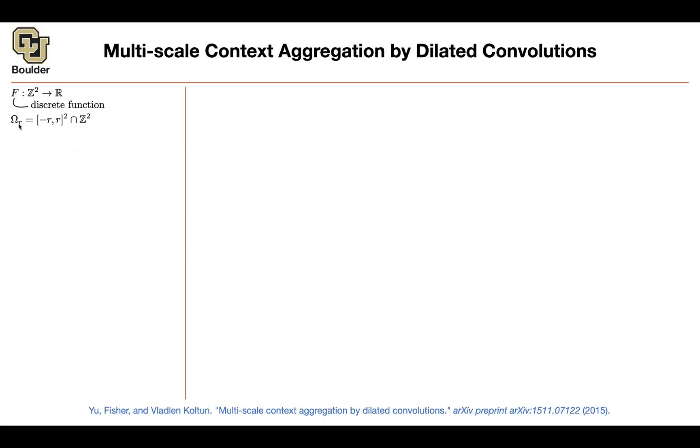We are going to define our domain for the kernel, and it's going to be from negative R to R squared, intersection with Z squared. So it's a small window in your space. Your kernel is going to be a function from this space to R, and how many discrete filter values you're going to have. The discrete size is going to be 2R plus 1, and you have a height and a width, and that's going to give you a square.